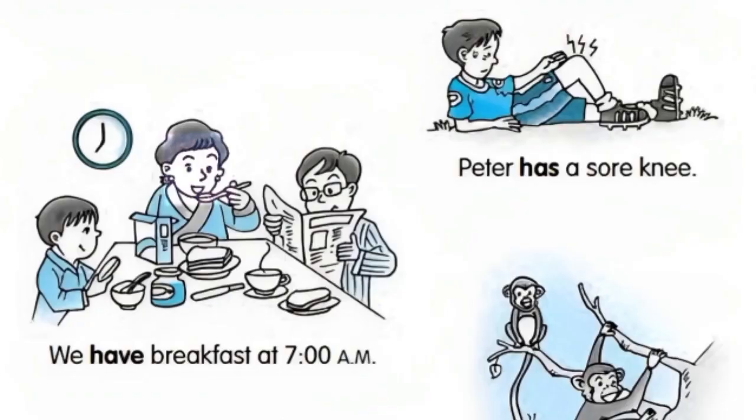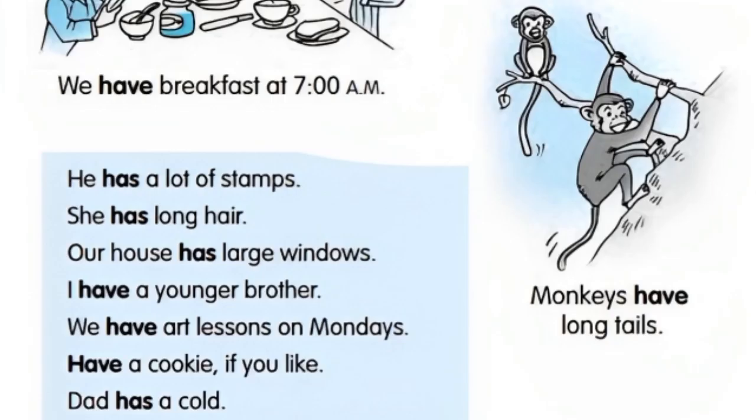Examples: Peter has a sore knee. We have breakfast at 7 AM. Monkeys have long tails. Now let's discuss the use of the verbs has and have with pronouns. Use has with he, she, and it, and also with singular nouns. Use have with I, you, we, and they, and also with plural nouns.